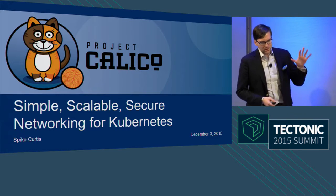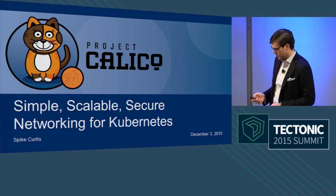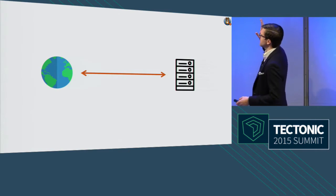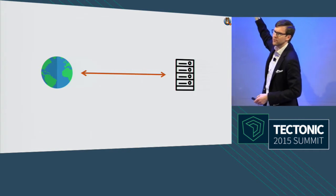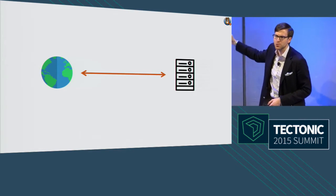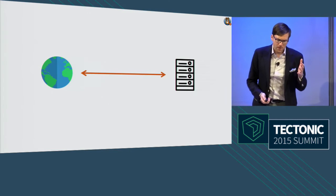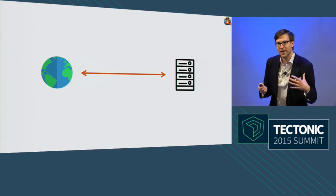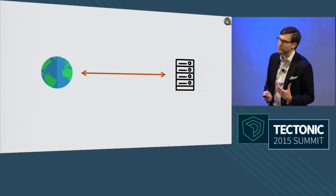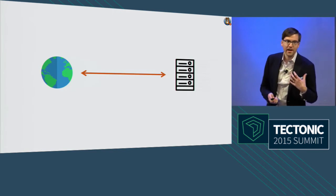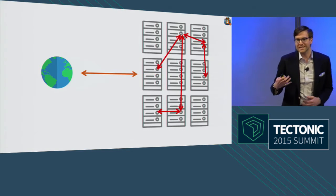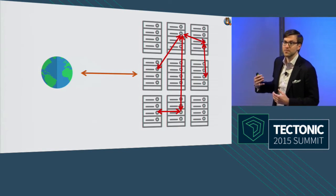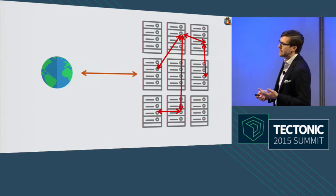What I want to talk about today is networking for Kubernetes. I'll start by reminding you of something you all already know, which is that networking is important. Networking used to be the thing that allowed you to reach your customers and allowed your customers to reach your application. But now our ambitions for what applications should be have grown much faster than Moore's Law, so applications don't fit on single boxes. Even if they could, we want high availability. The network is now integrally involved in the actual running of your application.